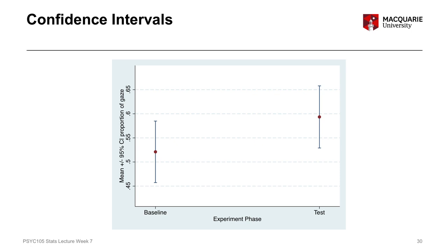Confidence intervals are really useful because they represent two things due to how the standard error formula works. They represent the amount of variability — specifically the standard deviation of the scores — but they also represent the sample size, because the standard error formula is the standard deviation divided by the square root of the sample size. If you have more variability in your individual scores, you'll have wider confidence intervals; less variability means narrower confidence intervals. Similarly, a bigger sample size gives you narrower confidence intervals, and a smaller sample size gives you wider confidence intervals.